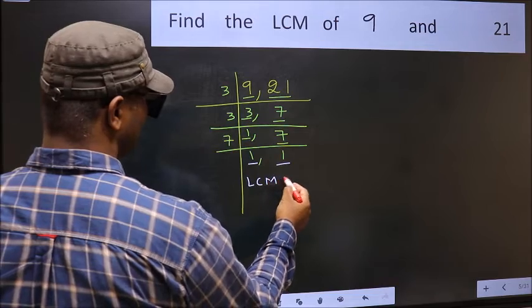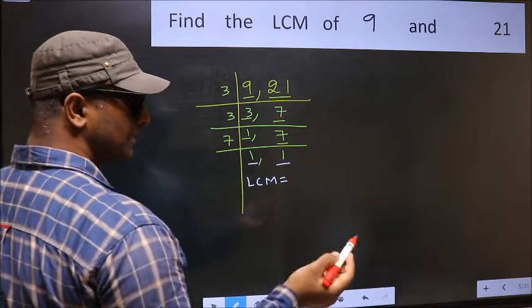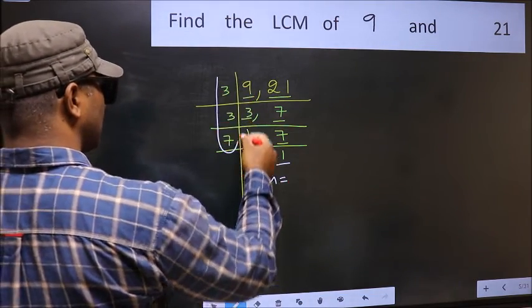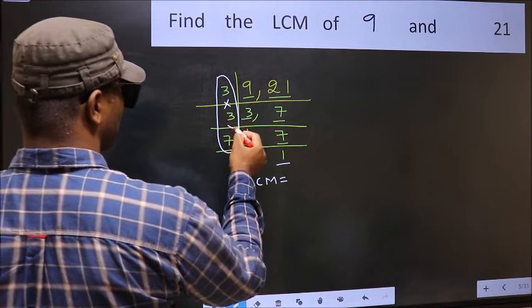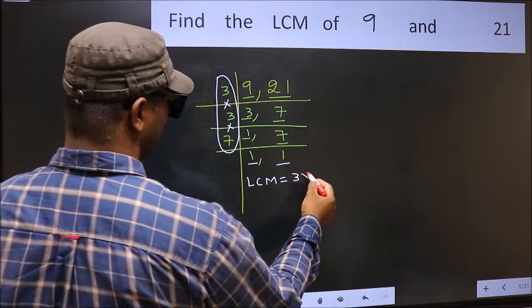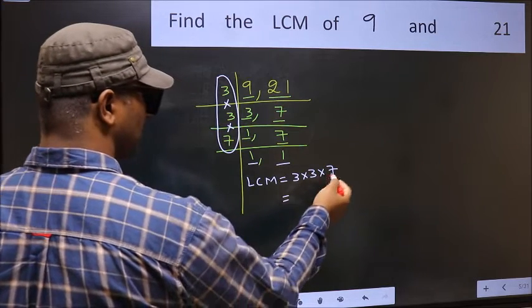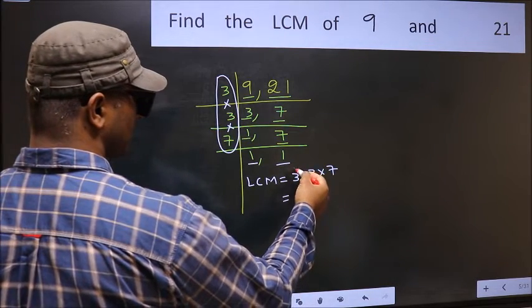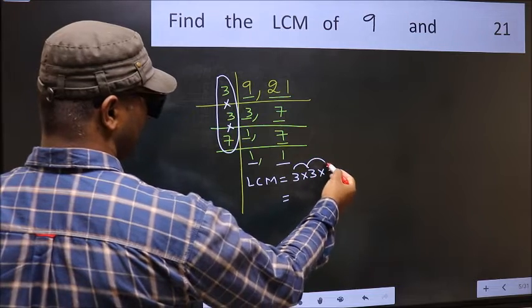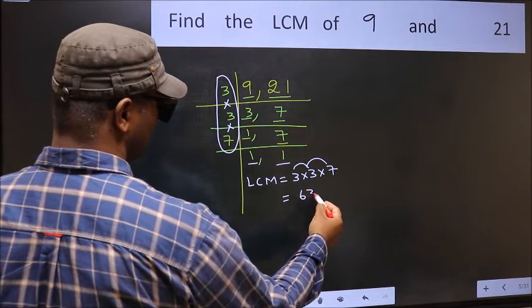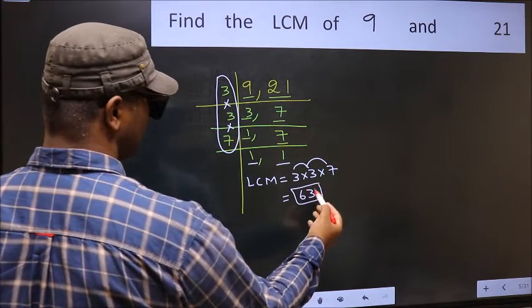So our LCM is the product of these numbers. That is 3 into 3 into 7. Let us multiply these numbers. 3 into 3 is 9, 9 into 7 is 63. 63 is our LCM.